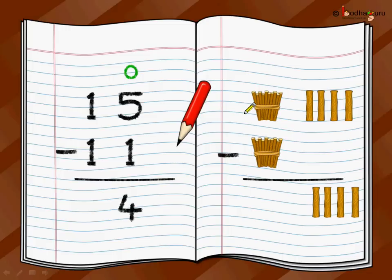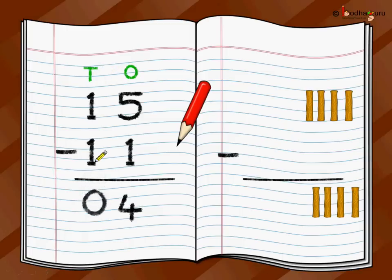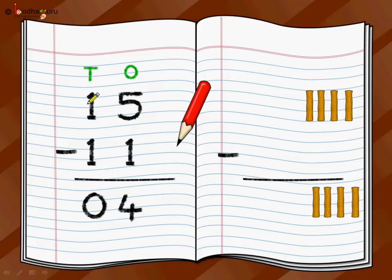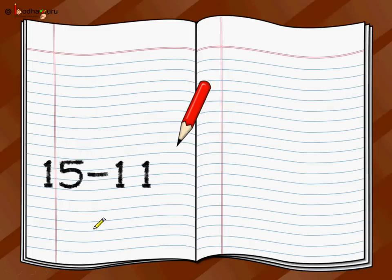Then you move to the tens position. You have one bundle of ten sticks and you want to remove an entire one bundle of ten sticks, so you will be left with no bundle — zero. Same way, at the tens position, one minus one is equal to zero. So fifteen minus eleven is equal to four, or zero four — same as four.